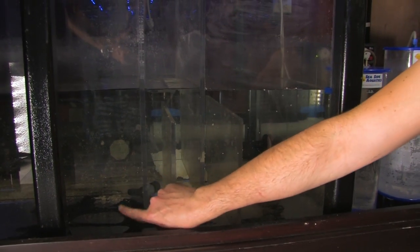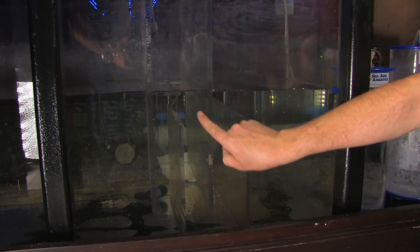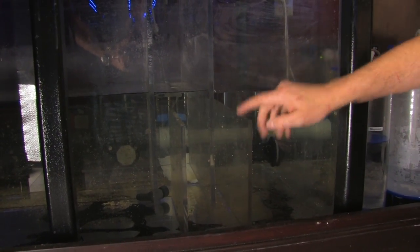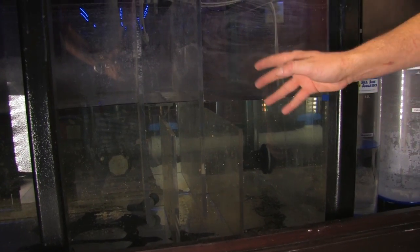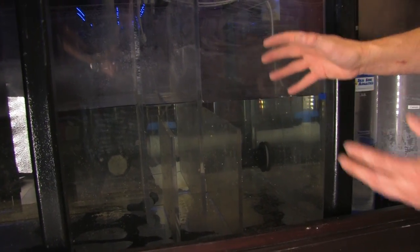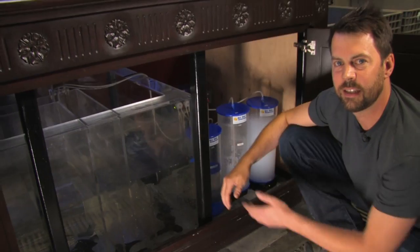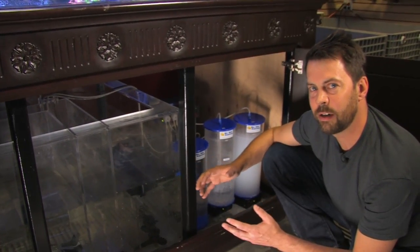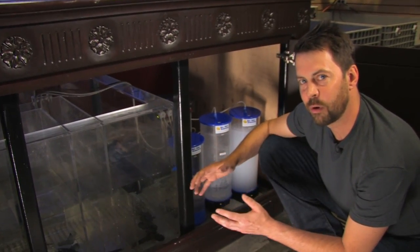This forces the water up here once, down, and then up again. Each time you force the water up, that helps to remove bubbles from the water so that the return pump is not pushing them up into the display tank. This keeps the water in the display tank much more clear.